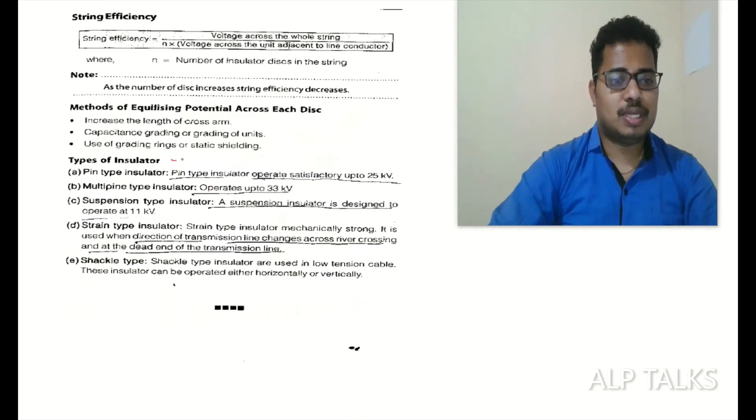Types of insulators: pin type insulator operates satisfactorily up to 25 kV. Multi-pin type insulator operates up to 33 kV. Suspension type insulator - a suspension insulator designed to operate at 11 kV. Strain type insulator - mechanically strong, it is used when direction of transmission line changes, across river crossing, and at the dead end of the transmission line.